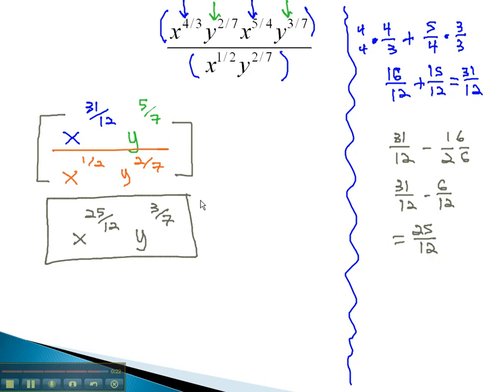We are done simplifying when each variable appears once and there are no negative exponents in our solution.